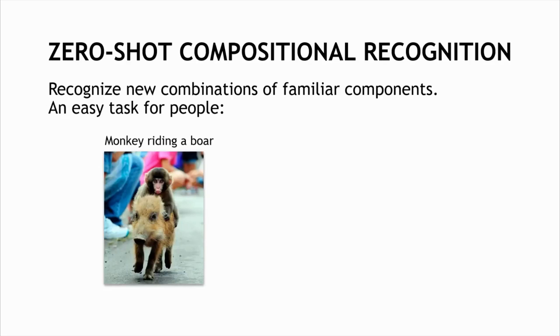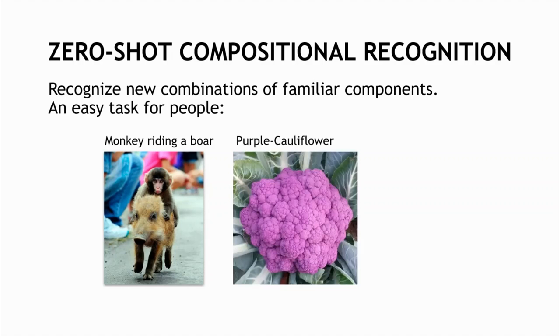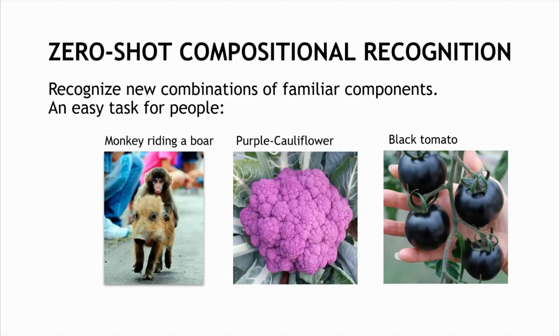This work is about recognizing new compositions of familiar components, images like a monkey riding a boar, a purple cauliflower, or a black tomato. In all these cases, familiar components are combined in new ways.